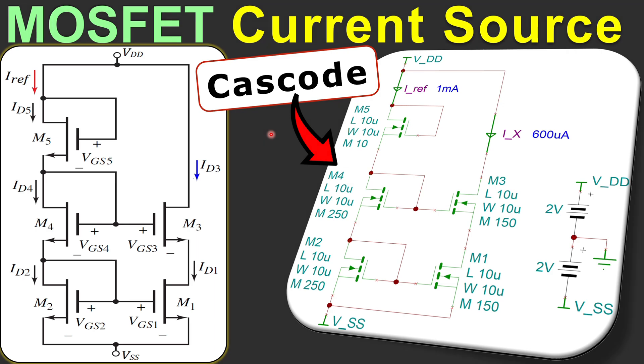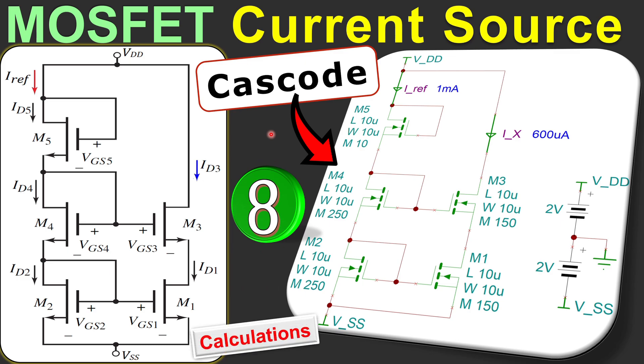Greetings and welcome to a new video about MOSFET current source design. This is our example number 8 where we discuss the cascode current design. In this case we will also use only transistors for our current design. We will see that step by step in our calculation and also verify these in SPICE simulations.